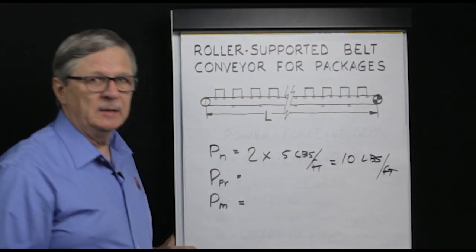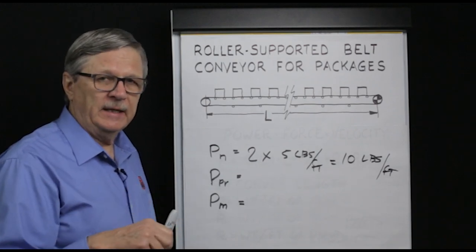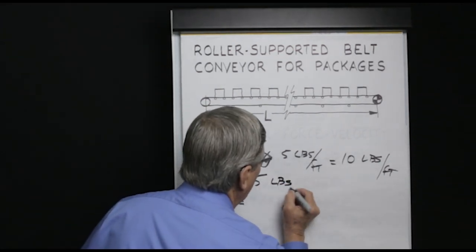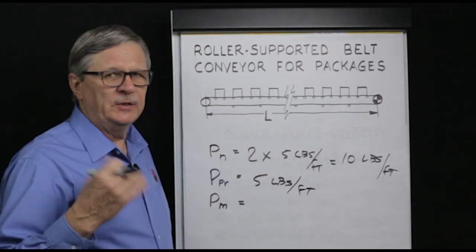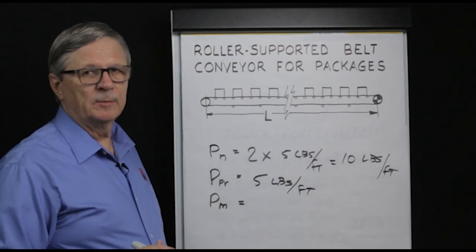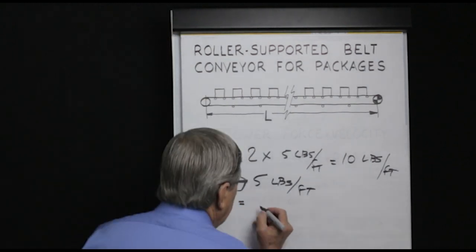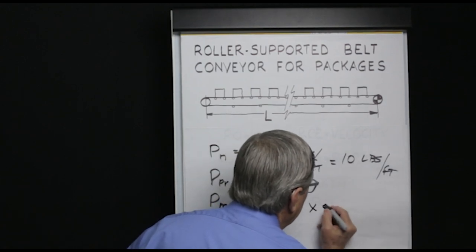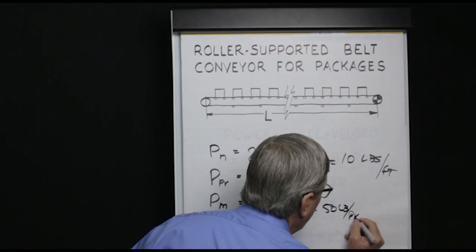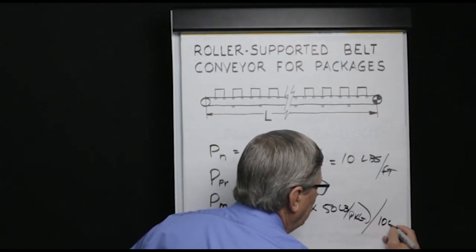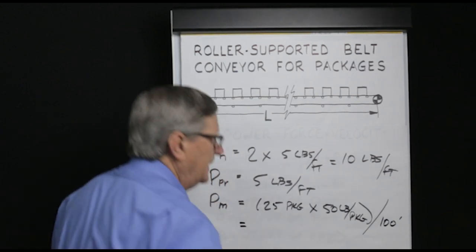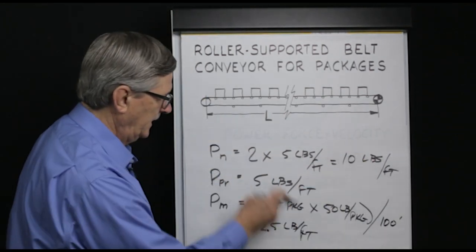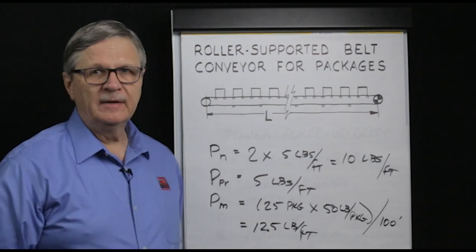Next, we look at PPR, the weight per foot of the rotating parts. If we don't know the brand, a good simplifying assumption is 5 pounds per foot — though if the rollers are particularly long or thick-walled, that number would need adjustment. Finally, PM is the weight per foot of product. With 25 packages on the conveyor, each weighing 50 pounds, over a 100-foot conveyor, PM equals 12.5 pounds per foot.